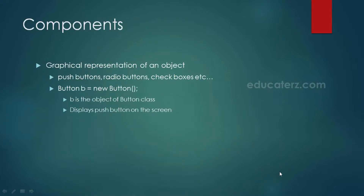Next is a component. It represents an object which is displayed pictorially on the screen. For example, if we create a Button object — Button b = new Button() — here b would be an object of the Button class. That is, if we display this b on the screen, it displays a push button. So a component is nothing but a graphical representation of an object.